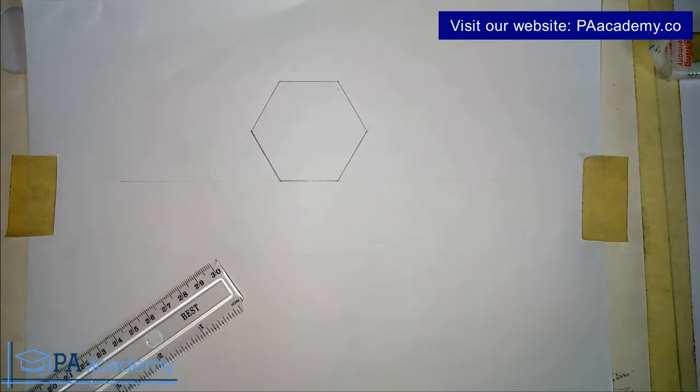So if you are given a regular polygon, irrespective of the polygon you are given, that pentagon, hexagon, octagon, decagon, irrespective of any regular polygon, how do you draw a triangle that will be of the same area with that regular polygon? So welcome to PA Academy.